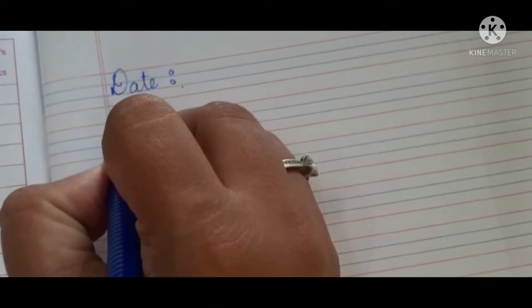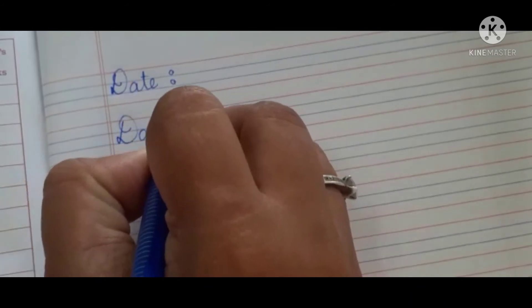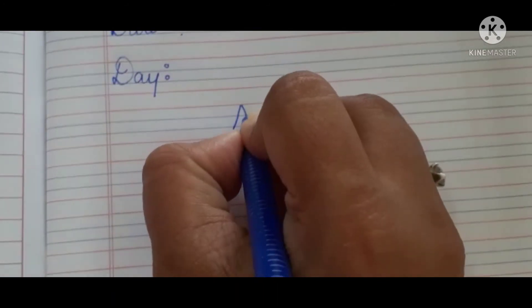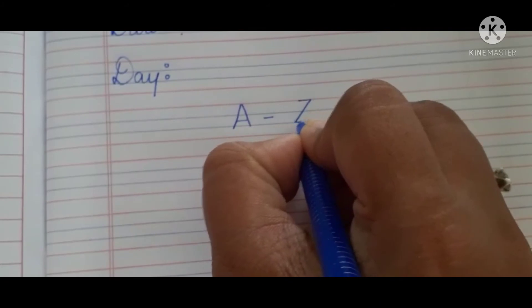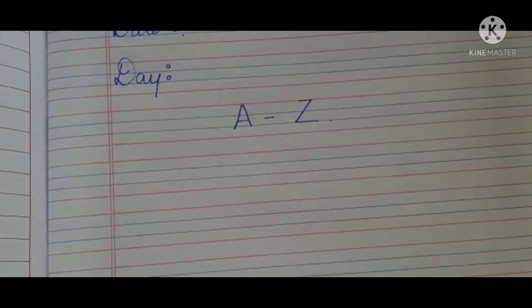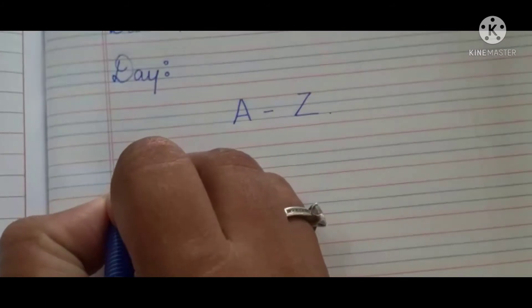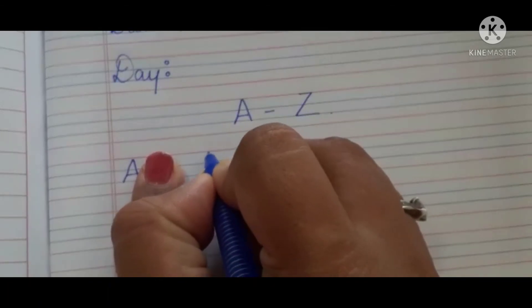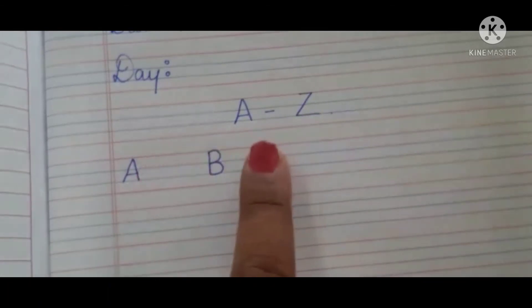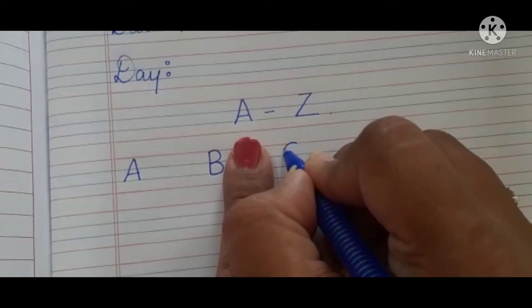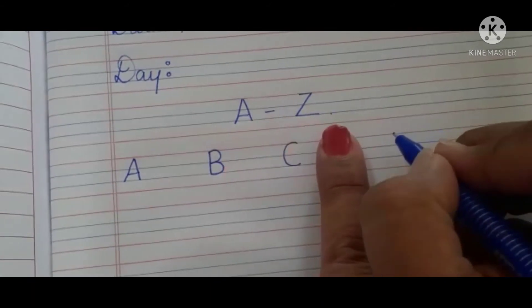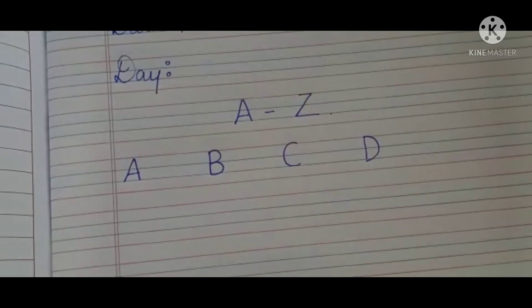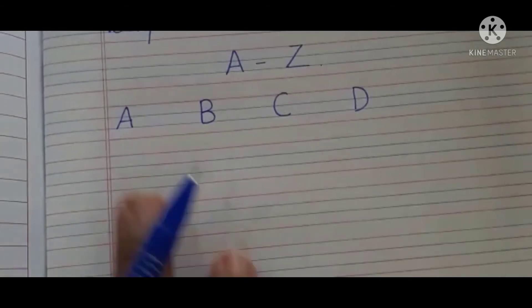In the next line, write the day. Here you have to write A to Z in capital letters. How you have to write is: first write A, then put one finger space and write B, again put one finger space and write C, then again a finger space and write D, and so on. You have to complete A to Z.